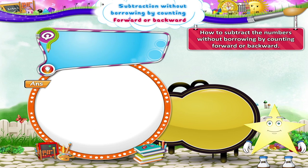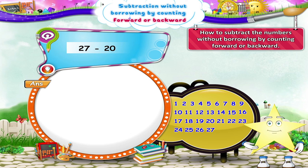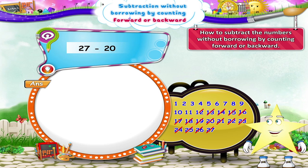Ok Starry, let's solve the second example again: subtract 27 minus 20. What shall we do Starry? Yes. Let's count 20 numbers backwards from 27. That is: 26, 25, 24, 23, 22, 21, 20, 19, 18, 17, 16, 15, 14, 13, 12, 11, 10, 9, 8, 7. On which number did we reach? Yes, 7. Thus, 27 minus 20 equals 7.